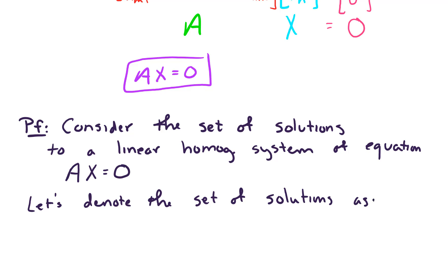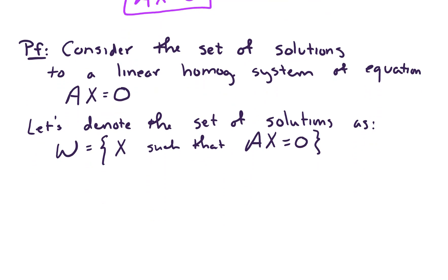So let's denote this set. Let's denote the set of solutions as the set W. W is the set of vectors X, capital X, such that AX is a column vector equals zero. And we want to prove that W is a subspace.